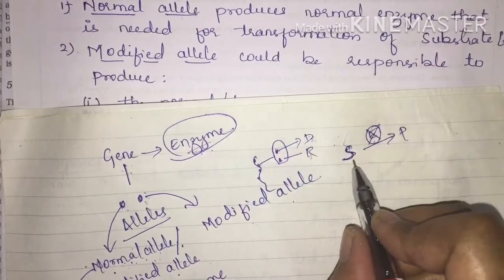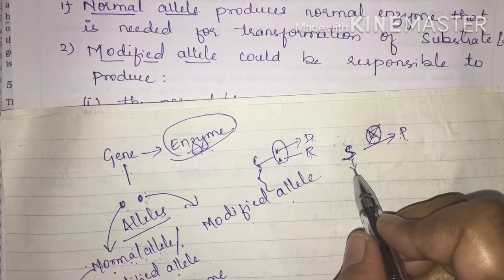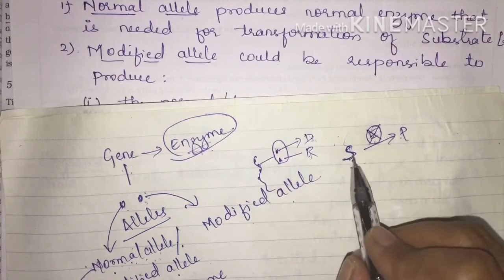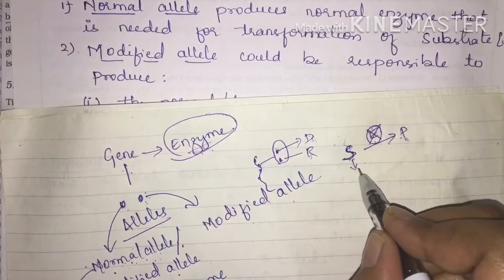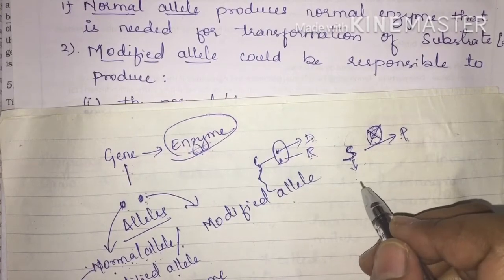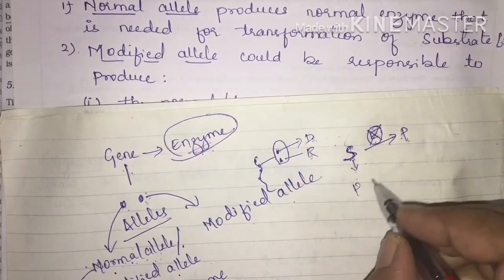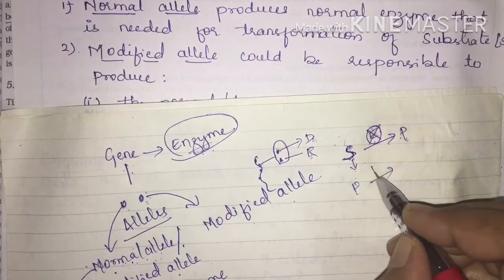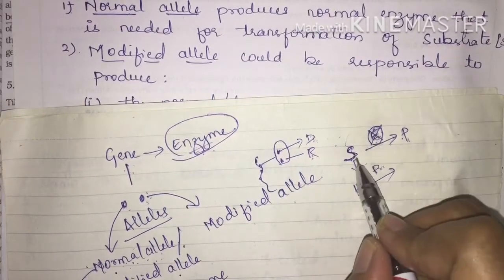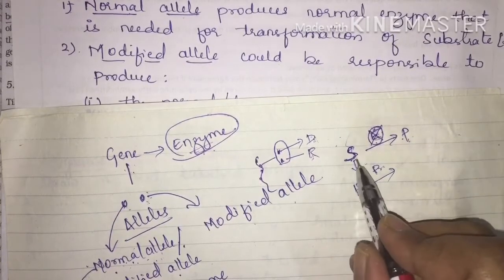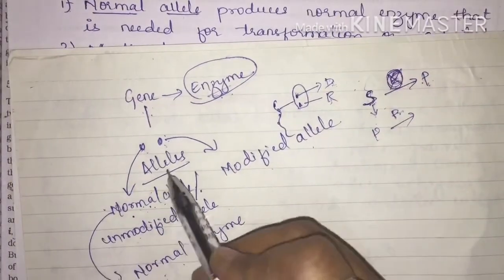If this enzyme is absent, the substrate won't get converted into product — it will remain as it is without undergoing any change. Naturally, the substrate should get converted into product, but if the enzyme is not present, the substrate starts to accumulate in the body. For example, if a digestive enzyme like protease is absent, proteins cannot be converted into their simplest forms.